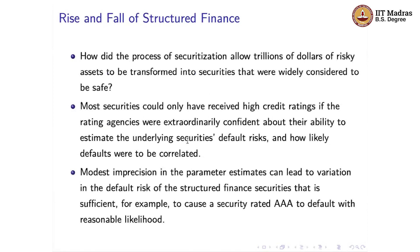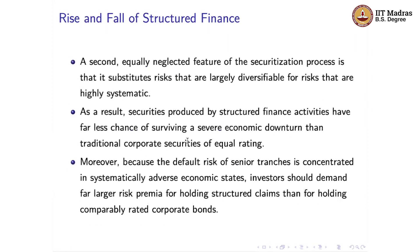This leads to several questions: how did securitization allow trillions of dollars of risky assets to be transformed into securities widely considered safe? Most of these securities could only have received high credit ratings if rating agencies were extraordinarily confident in their ability to estimate underlying security risk and default likelihood. We'll see that even a small amount of imprecision in these estimates can lead to enough variation in default risk that a security rated triple-A — the safest category — can default with a reasonable, even high, probability.